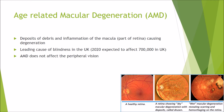Age-related macular degeneration (AMD) is characterized by deposits of debris and inflammation of the macula, which is part of the retina, causing degeneration. It is age-related because it typically affects those over 60. AMD is the leading cause of blindness in the UK, potentially affecting up to 700,000 people by 2020. AMD does not affect peripheral vision; sufferers lose visual acuity in their central vision, which appears fuzzy, greyed out, or blurry.